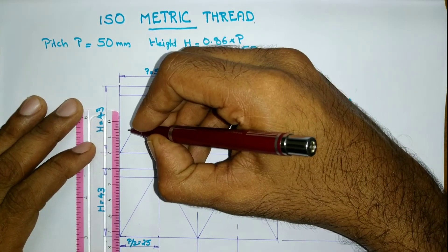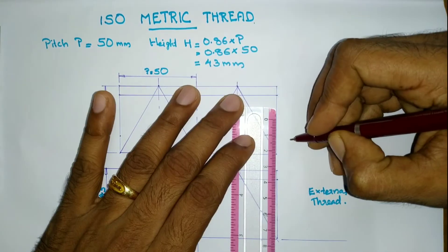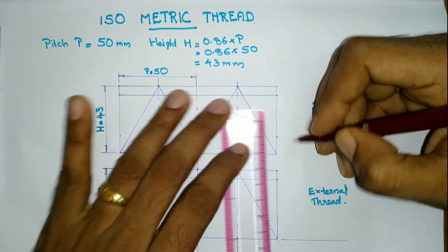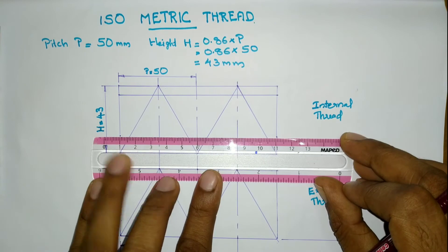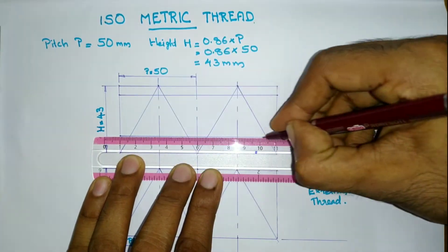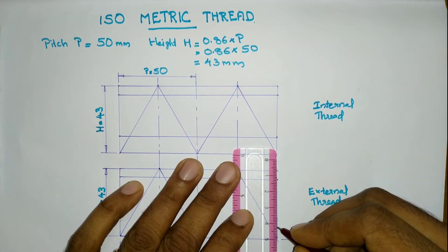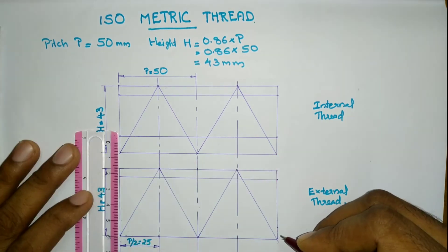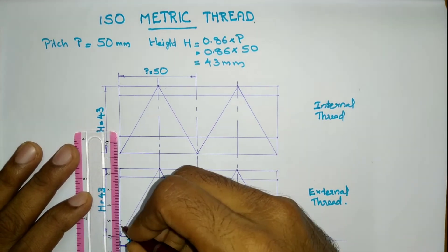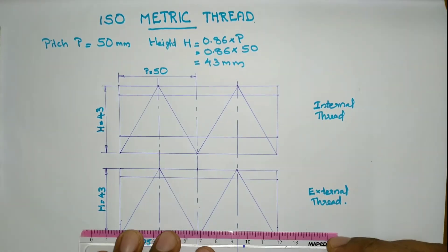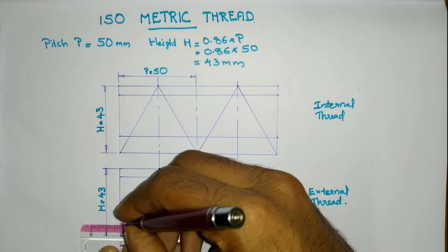Offset the bottom horizontal line of the internal thread upward with a distance equal to h ÷ 4, that is 10.75 mm. And offset that of the external thread upward with a distance equal to h ÷ 6, that is 7.16 mm.